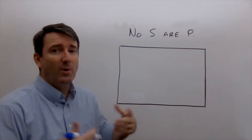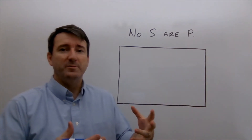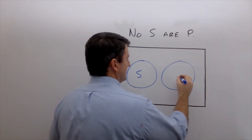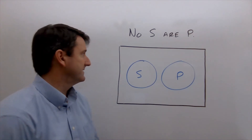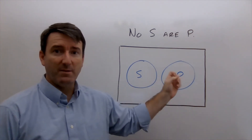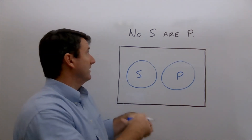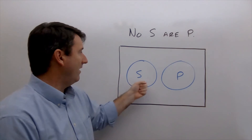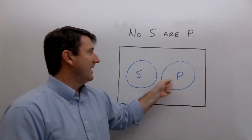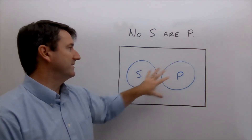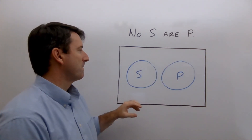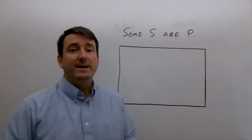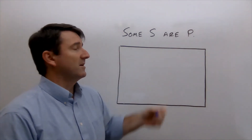The next categorical proposition is No S are P, and the Venn diagram for this is disjoint sets — two separate circles representing sets S and P with no overlap. The example is 'No fish are mammals.' Unlike the All S are P case, from this one we can make conclusions going the other way: if no fish are mammals, we also know no mammals are fish, because disjoint sets have no common members, and that works both ways.